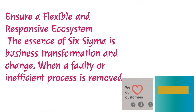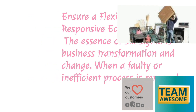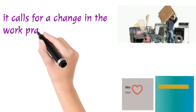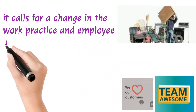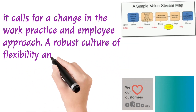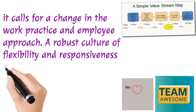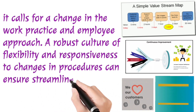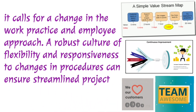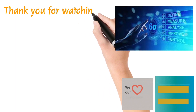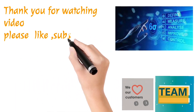Ensure a flexible and responsive ecosystem. The essence of Six Sigma is business transformation and change. When a faulty or inefficient process is removed, it calls for a change in work practices and employee approach. A robust culture of flexibility and responsiveness to changes in procedures can ensure a streamlined project.